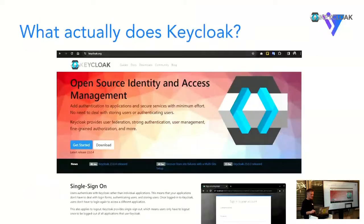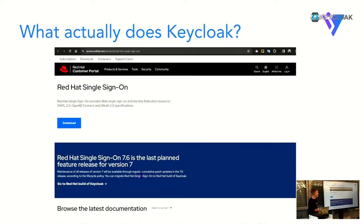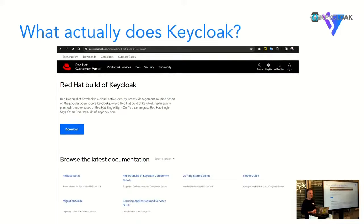What brought me to this talk is that when I looked at the Keycloak open source website, it always says it's an open source Identity and Access Management. But until last year, if you looked at the Red Hat product website for Red Hat SSO, it just said something about single sign-on. Red Hat very elegantly solved this problem by saying they don't do Red Hat SSO anymore - they just call it the Red Hat build of Keycloak, which makes perfectly sense because it's basically the same thing.